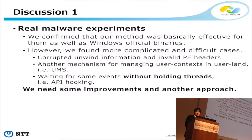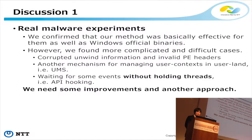We also conducted a real malware experiment and confirmed our method was basically effective. However, we found more complicated and difficult cases — for example, corrupted unwinding information and invalid PE headers used by malware. Another case involved malware using another mechanism for managing user context in user land, such as UMS. And malware sometimes waits for some events without holding threads, such as by hooking APIs and then activating their code. To solve these cases, some improvement of our method and additional research is required.